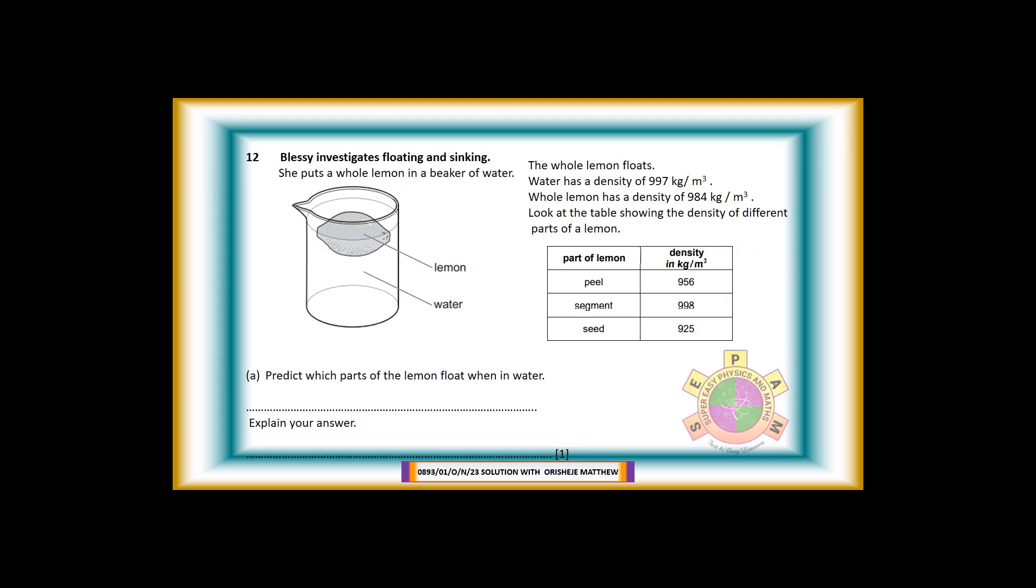Question 12. Blessy investigates floating and sinking. She puts a whole lemon in a beaker of water. The whole lemon floats. Water has a density of 997 kg per cubic meter. Whole lemon has a density of 984 kg per cubic meter. Look at the table showing the density of different parts of a lemon. Question 12a: Predict which parts of the lemon float when in water. Explain your answer. For 1 mark. Answer: Peel of the lemon and seed will float in water. Explanation: Density is less than the density of water.